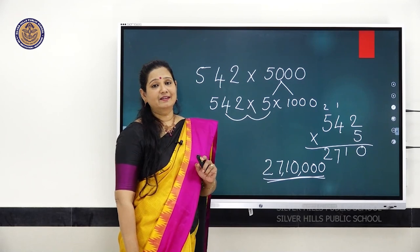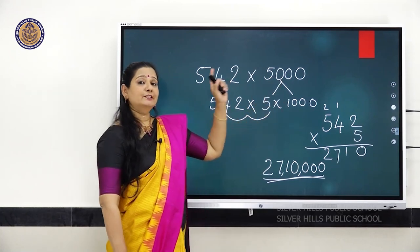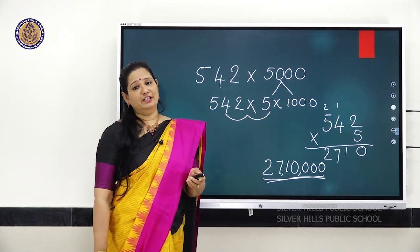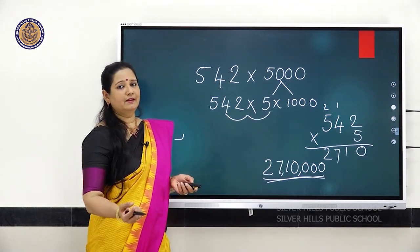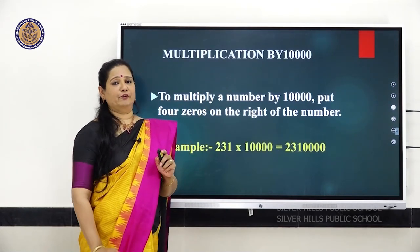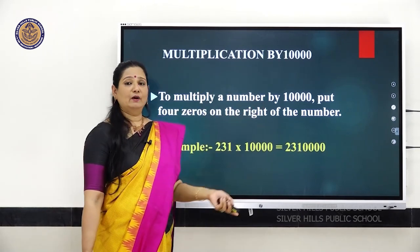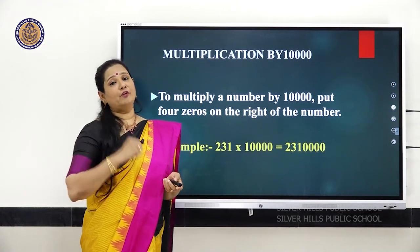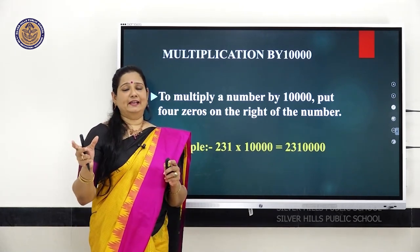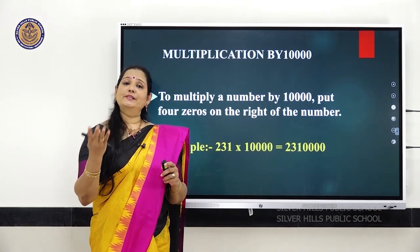When you multiply any number by the multiples of 1000, first multiply that number with the given number, then add 3 zeros. Now let us move to the last one — you have to study till 10,000 in class 4. To multiply a given number by 10,000, in 10,000 there are 4 zeros, so write the number and add 4 zeros towards the right.